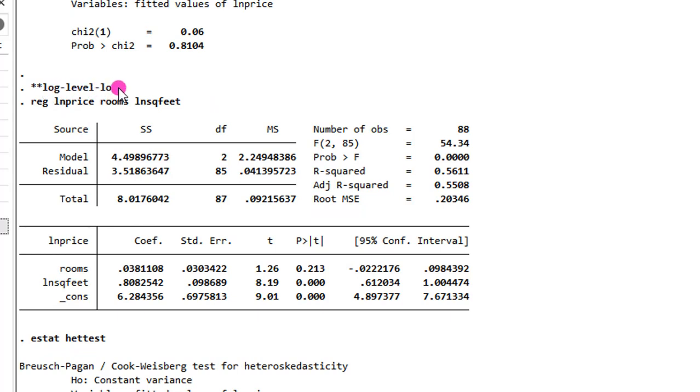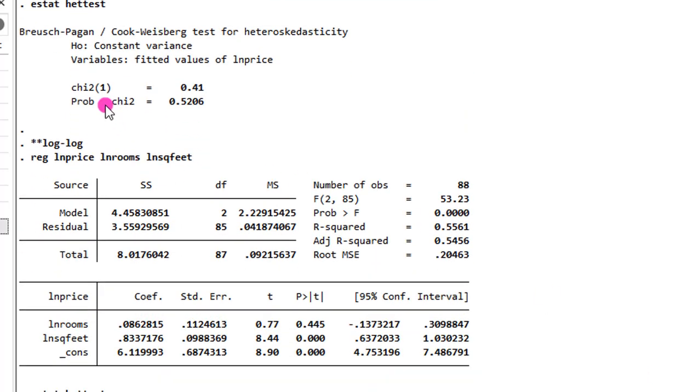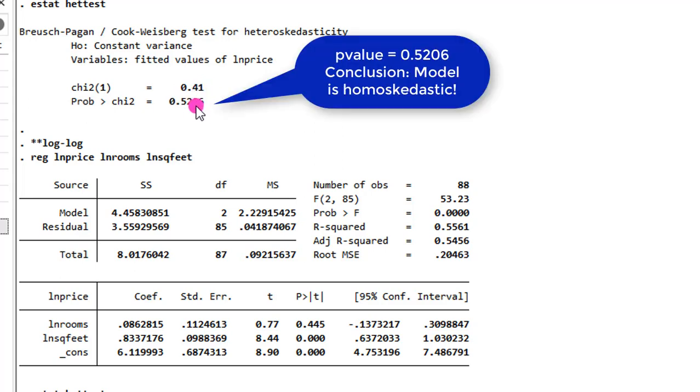Next is the augmented log-level model, what I call the log-level-log model. Let's take a look at the Bruch-Pagan results for heteroskedasticity. And we can see that the p-value is 52.06%, way above 5% level. And evidence that the problem of heteroskedasticity has been corrected the moment we augmented the functional form of the model.